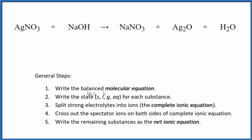First thing we need to do is balance the molecular equation. It looks like if we put a 2 here, and then a 2 here, and a 2 here, that will balance the molecular equation. So this is the balanced molecular equation for AgNO3 plus NaOH.